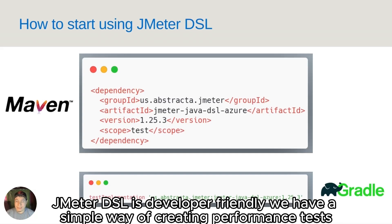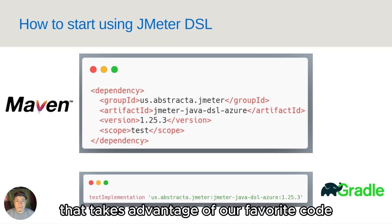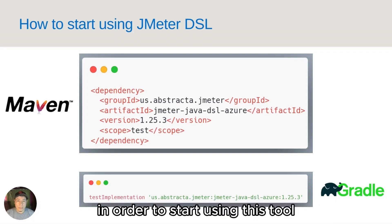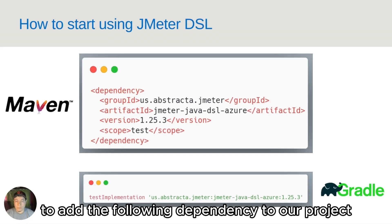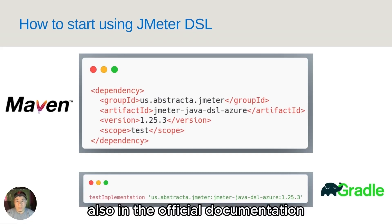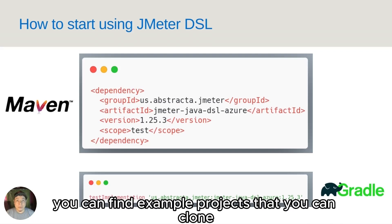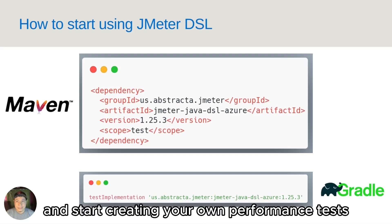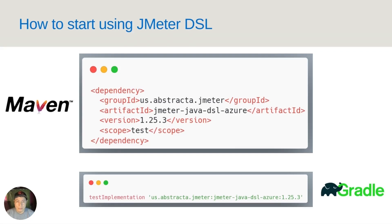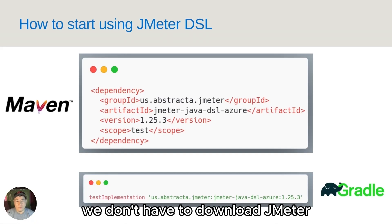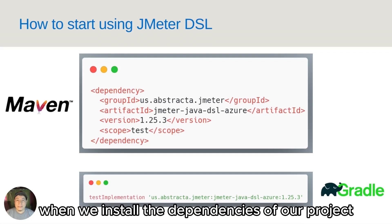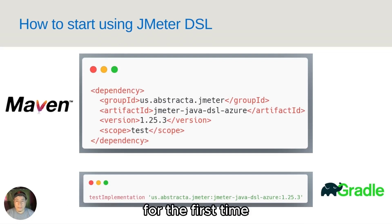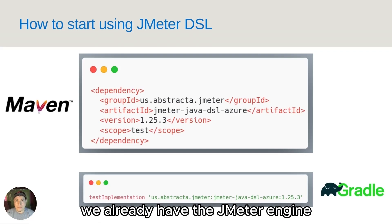JMeter DSL is developer friendly. We have a simple way of creating performance tests that takes advantage of our favorite code editor. In order to start using this tool, it is enough to add the following dependency to our project. Also, in the official documentation, you can find example projects that you can clone and start creating your own performance tests. An important thing to mention is that we don't have to download JMeter separately to be able to use JMeter DSL. When we install the dependencies of our project for the first time, we already have the JMeter engine.